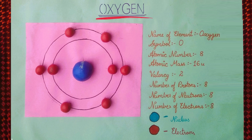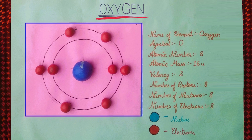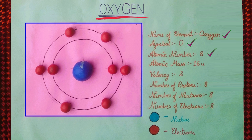Atomic Structure of Oxygen. This figure depicts the atomic structure of Oxygen. Name of element: Oxygen. Symbol: O. Atomic number: 8. Atomic mass: 16u. Valency: 2. Number of Protons: 8. Number of Neutrons: 8. Number of Electrons: 8.